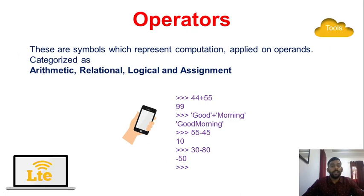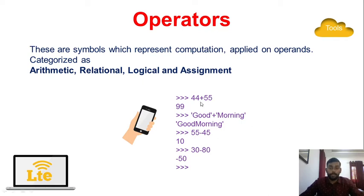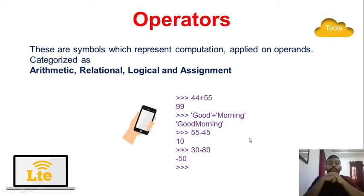Operators are symbols that represent computations applied on operands, like a + b or x * y. The categories of operators in Python are: arithmetic, relational, logical, and assignment. We have already seen assignment. Now, looking at arithmetic operators — for example, 45 + 55 gives 100. We can also use + with strings: 'good' + 'morning' gives 'good morning', which is called concatenation.